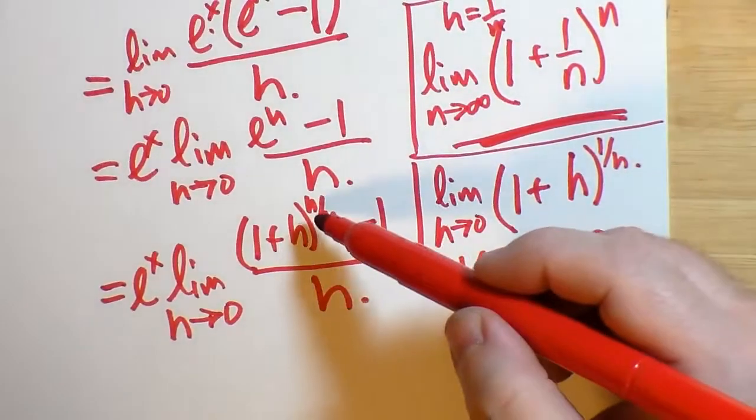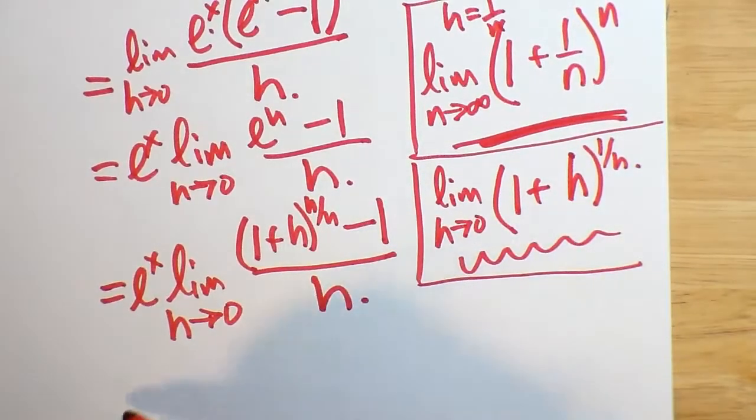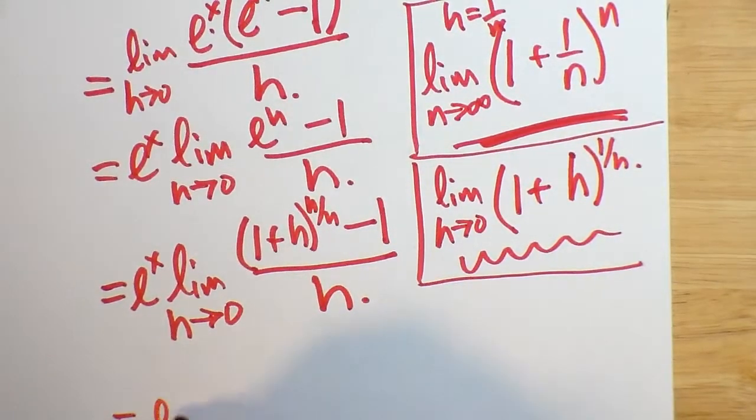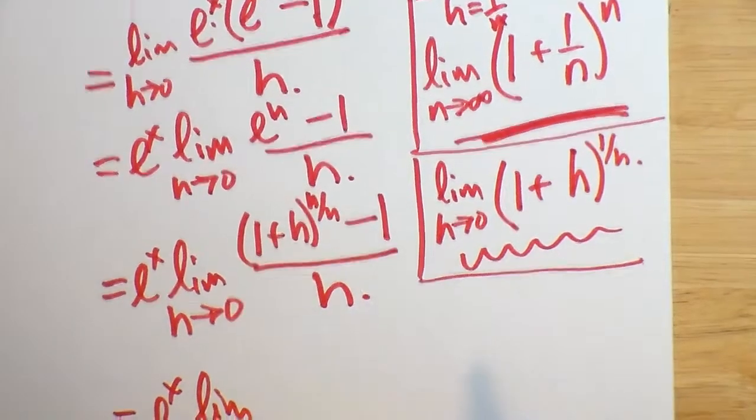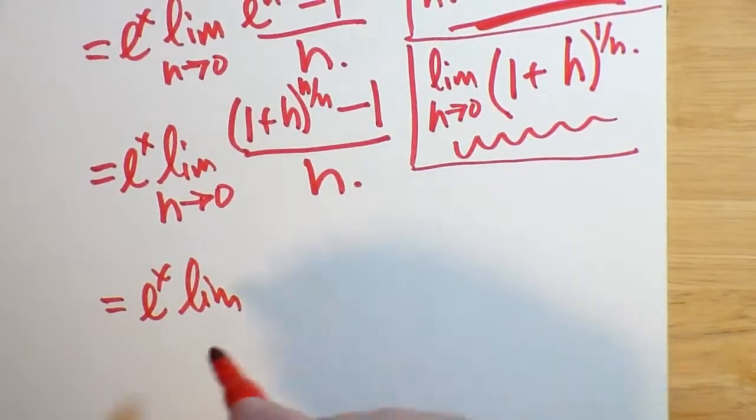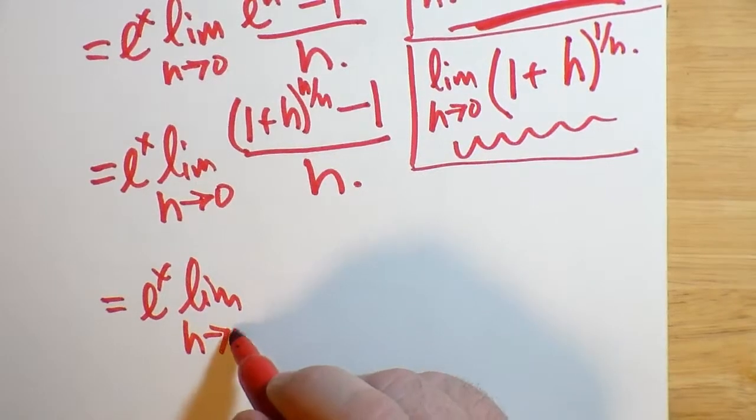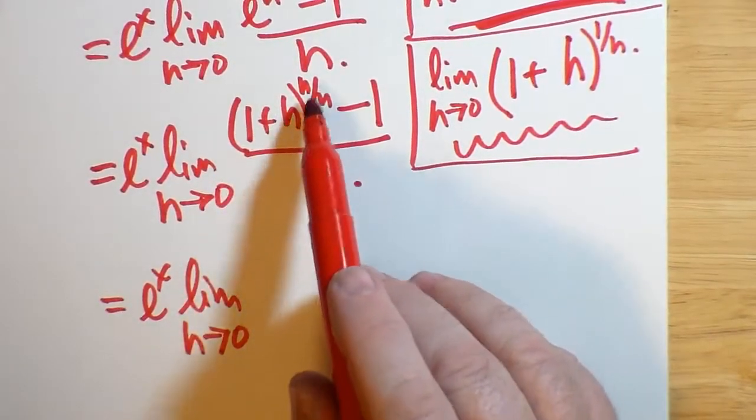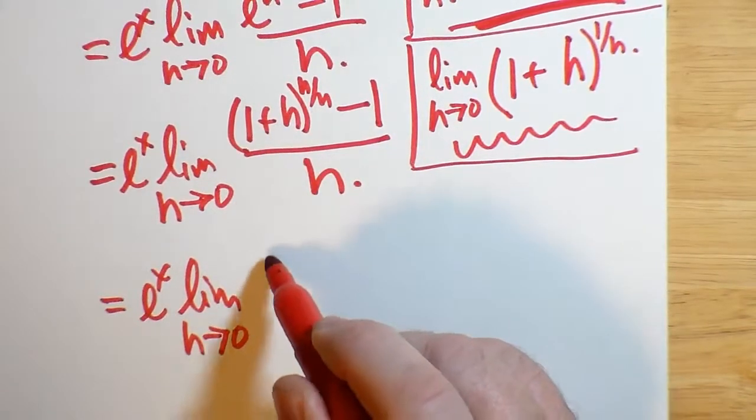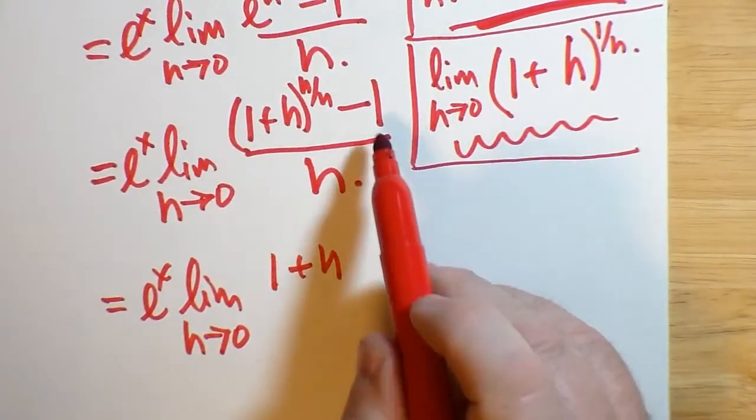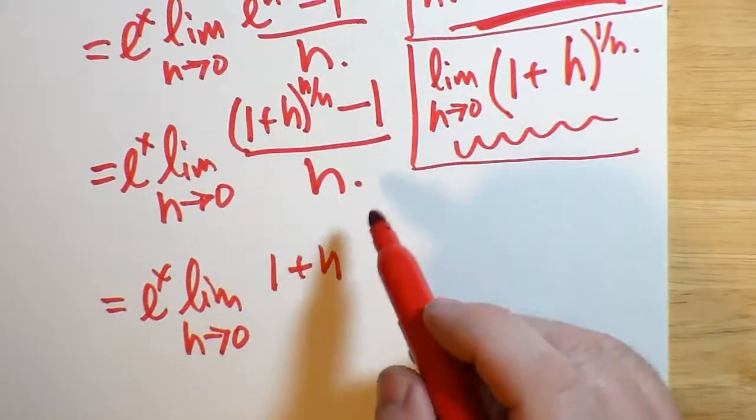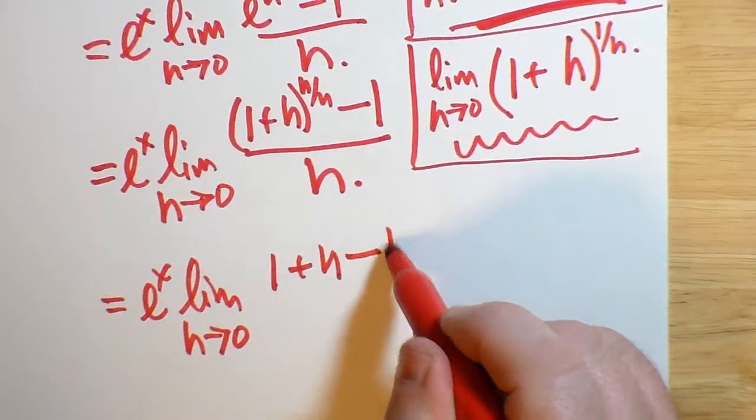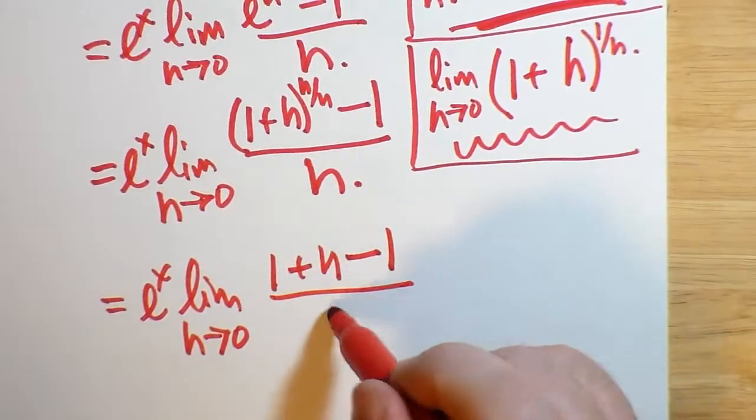And now, this h over h becomes 1. We get E to the x times the limit as, so you can see it here, h goes to 0. This now becomes 1 plus h all to the power of 1. So that's just 1 plus h without any power, really, just 1. Subtract 1 all over h.